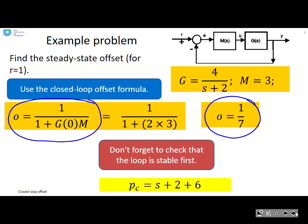Now, don't forget, we need to check that the loop is stable. So I've written down here the closed loop pole polynomial. And you can clearly see the pole is in the left half plane.